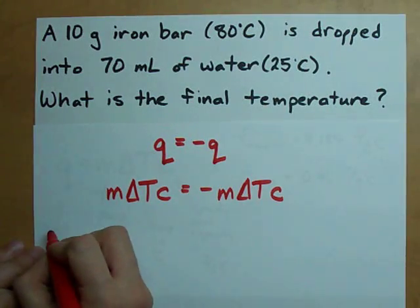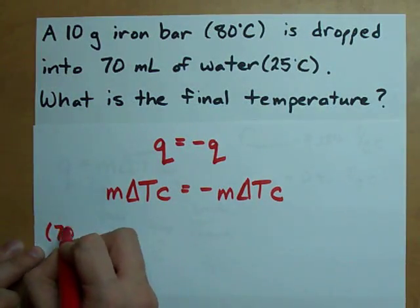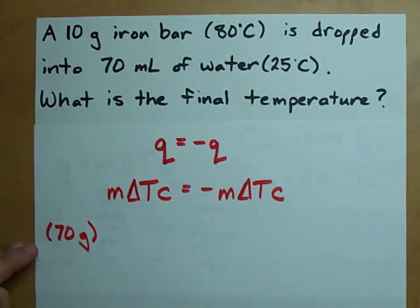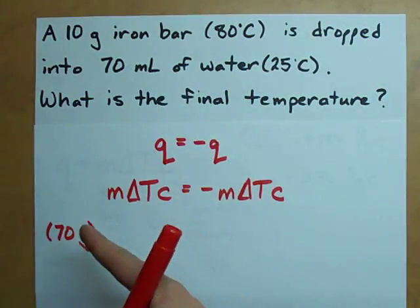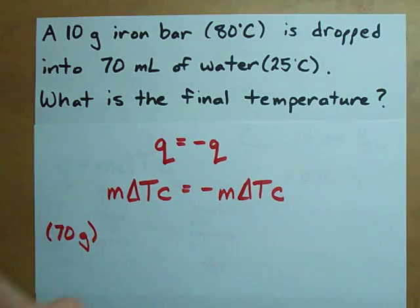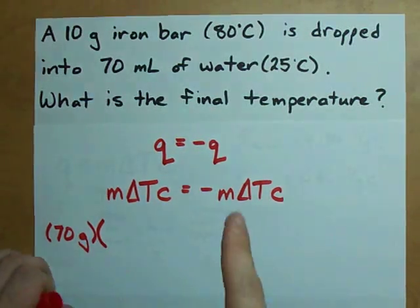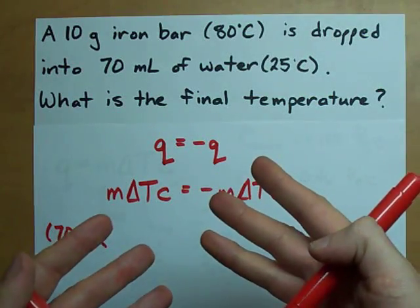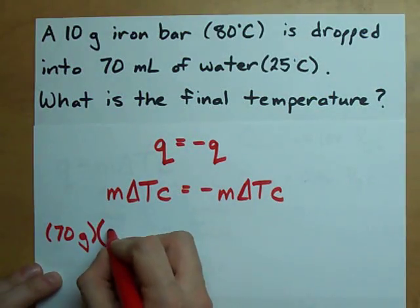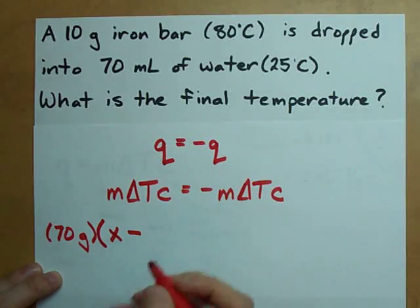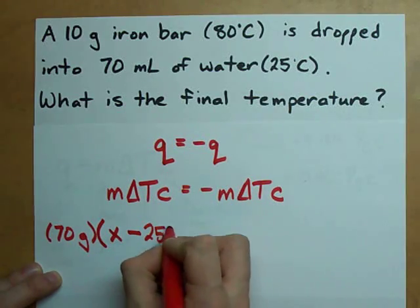The mass of the water is 70 grams. If you didn't know water was 1 gram per milliliter, well, then you need to learn yourself something. The change in temperature. Now, we don't know what the final temperature is here, so I'm going to call it X. And it started out at 25 degrees Celsius.